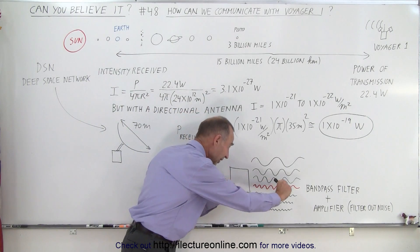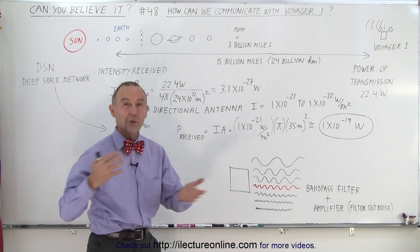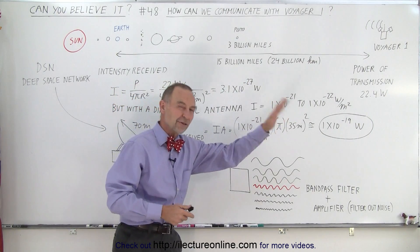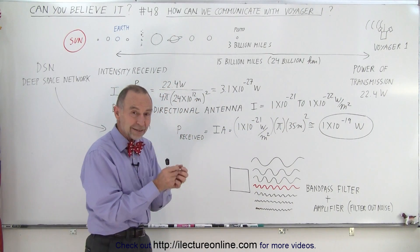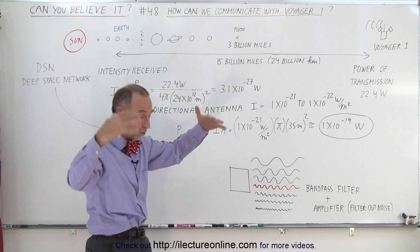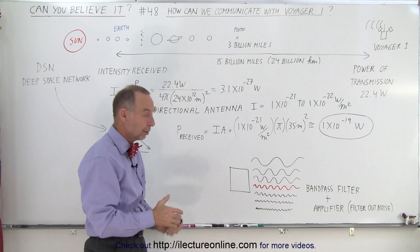But along with that one little frequency that we're looking for, we have all kinds of noise coming in that may be more powerful than the signal we're getting from that faraway satellite. So how do we get the actual signal out of the noise, which is much stronger than the actual signal?